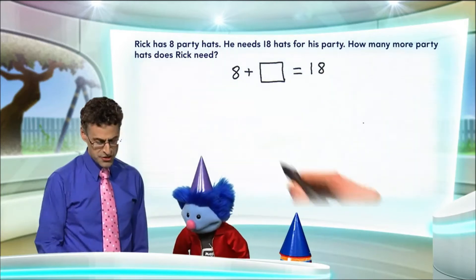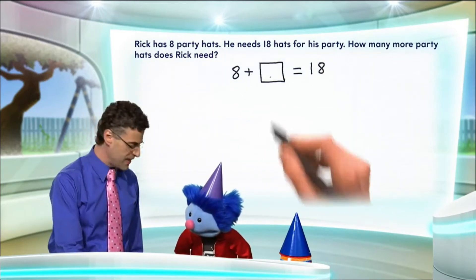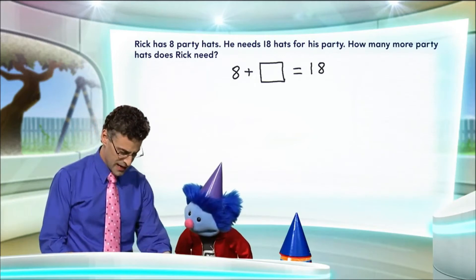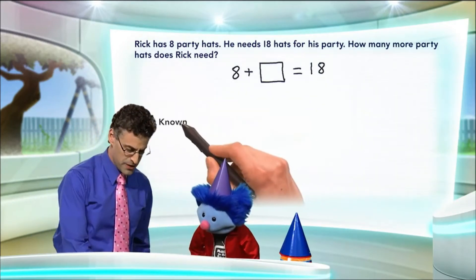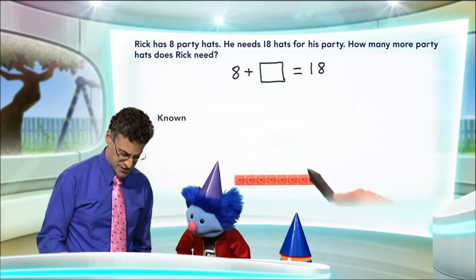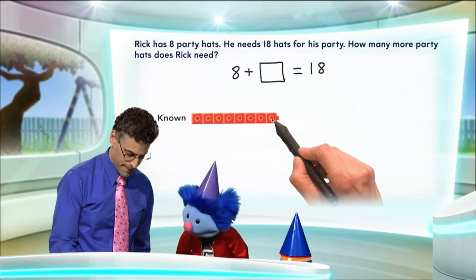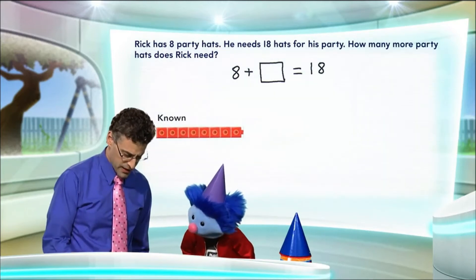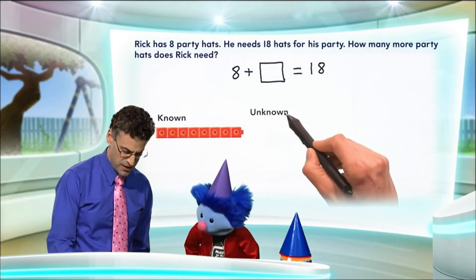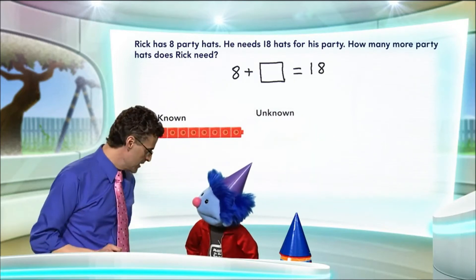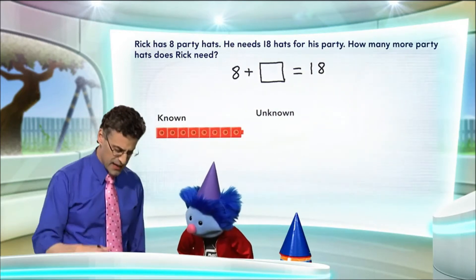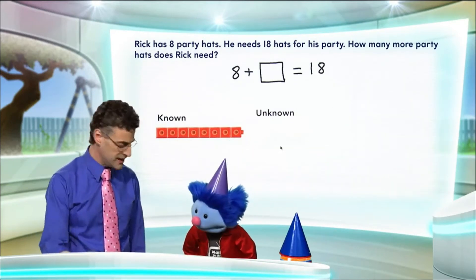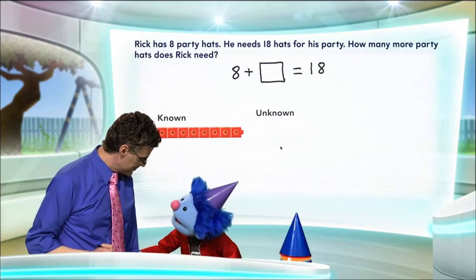That's right. So we have these known numbers and the unknown numbers, and we can actually model that. Let's model it right now together. We see we have the known — that's the eight hats you have. And now, we're going to add in and figure out what the unknown is. I'm going to use blue connecting cubes for the unknown, and we're just going to keep adding one cube after another until we have a total of 18. Good idea!